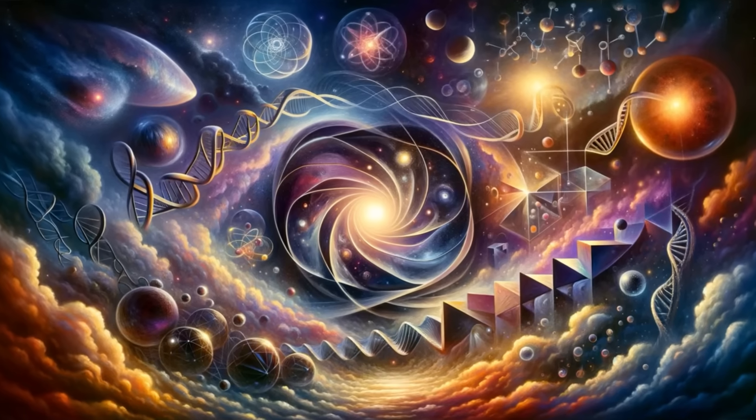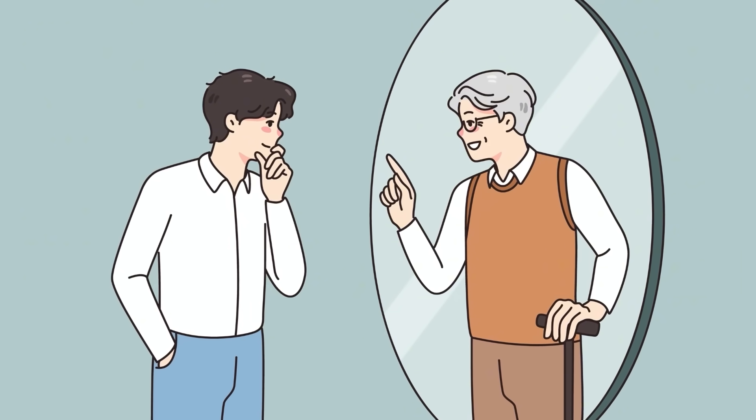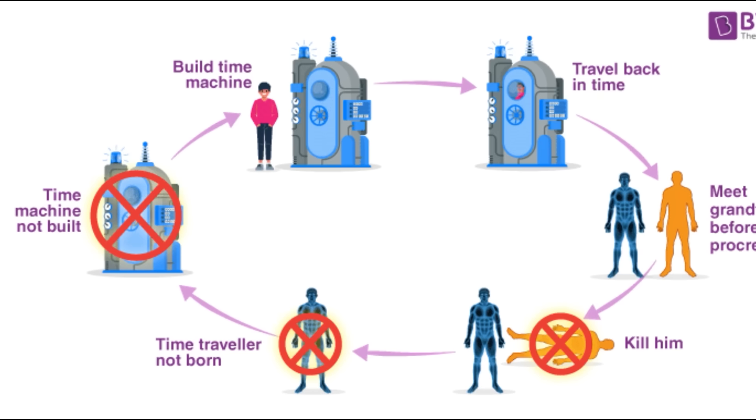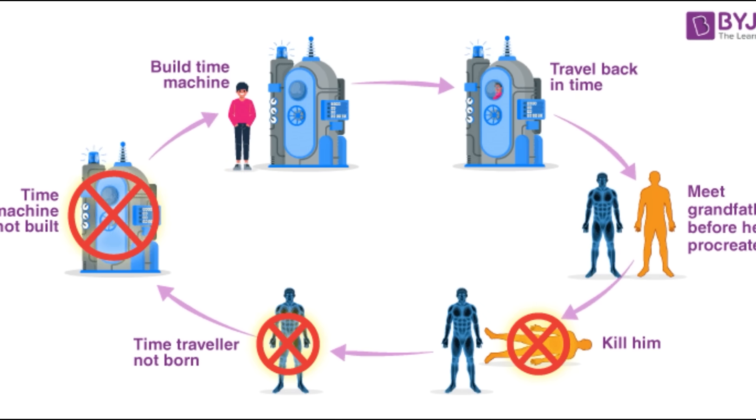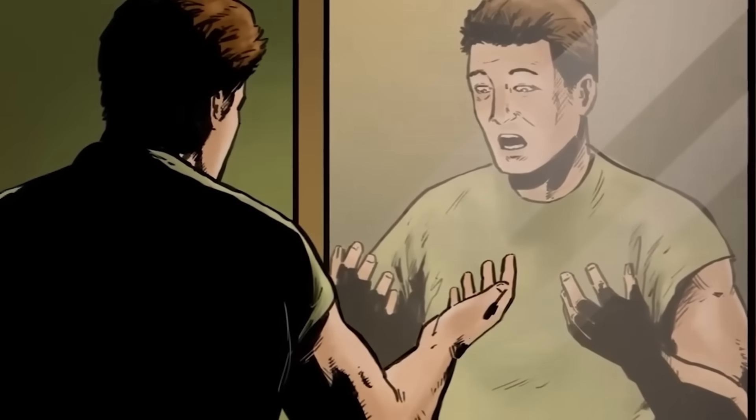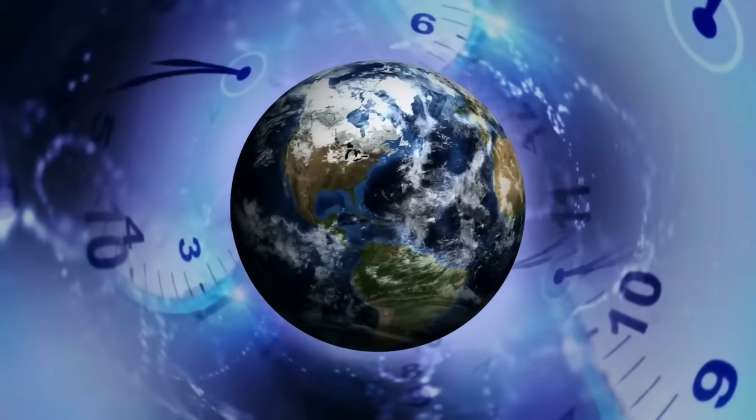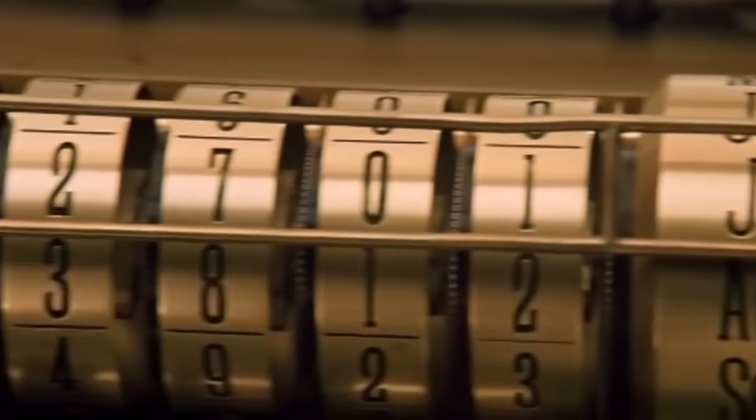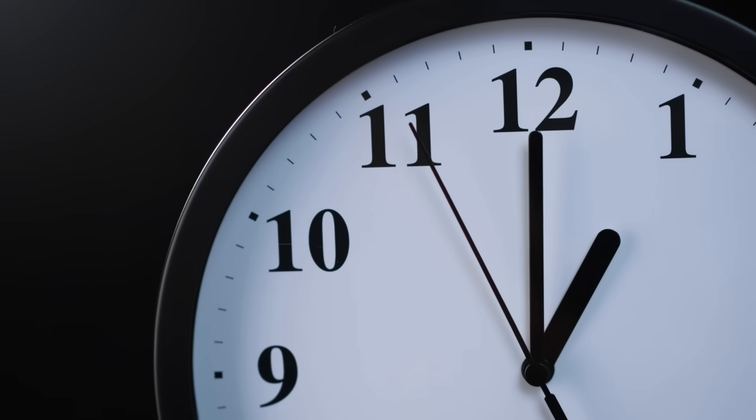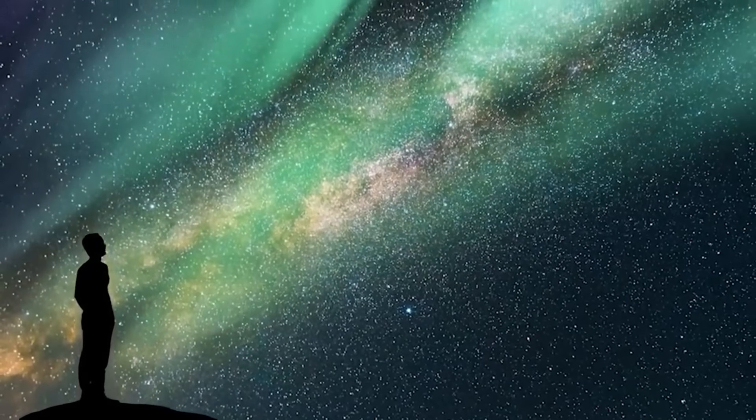What About the Grandfather Paradox? If time can move backward, doesn't that open up the possibility of paradoxes? One of the most famous is the grandfather paradox, where a person travels back in time and prevents their own grandfather from meeting their grandmother, thus preventing their own birth. While paradoxes like this make time travel seem impossible, the latest findings suggest that negative time in quantum systems doesn't necessarily allow for paradoxical events. Instead, it may point to a new way of understanding time.